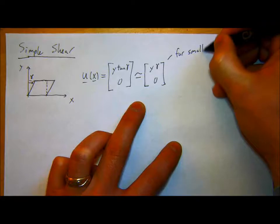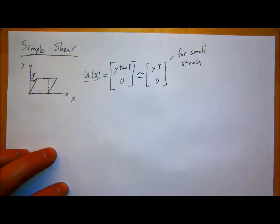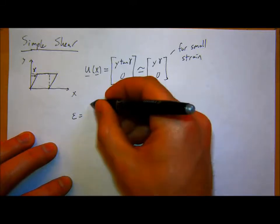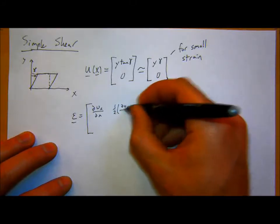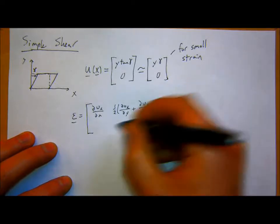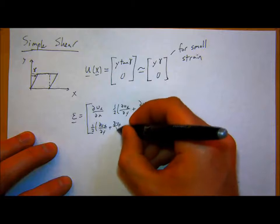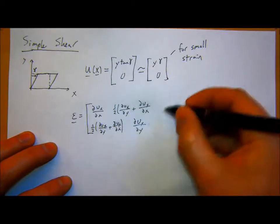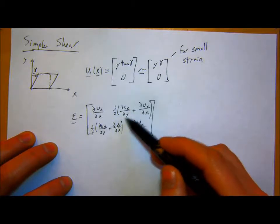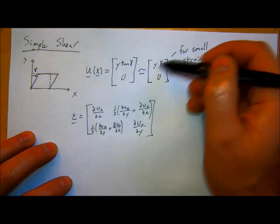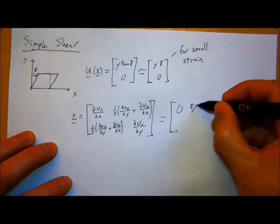If I take this and use my strain calculation, epsilon = one half times (grad u + grad u transpose): DUX/DX is zero, DUY/DY is zero, DUX/DY equals gamma, so the off-diagonal terms become gamma/2. The strain tensor is then [0, gamma/2; gamma/2, 0]. So we have a nice symmetric strain — everything works out the way we wanted to for the strain.